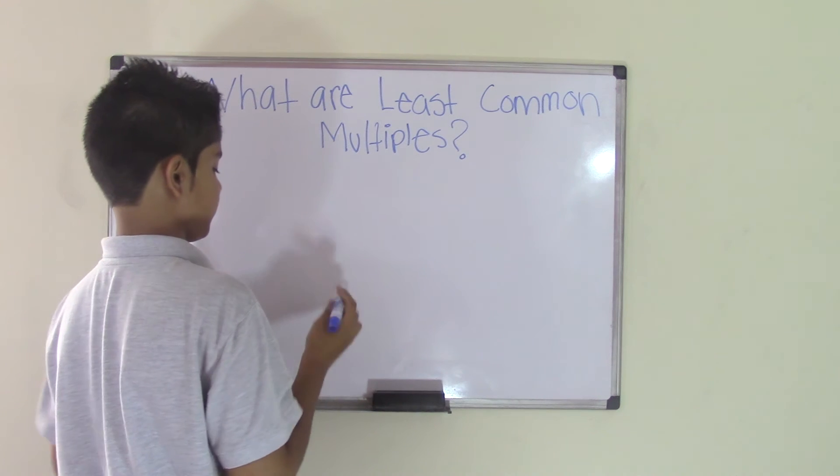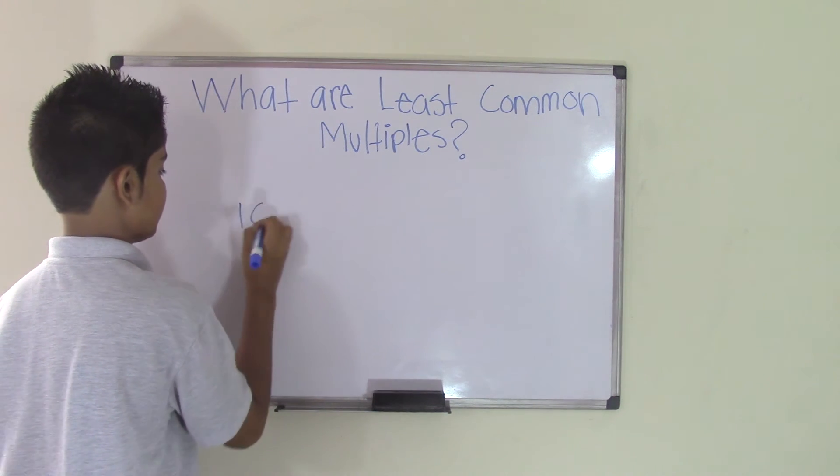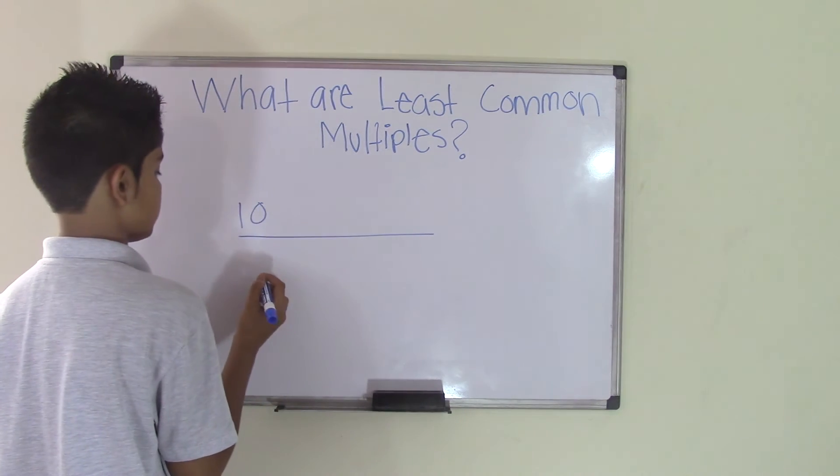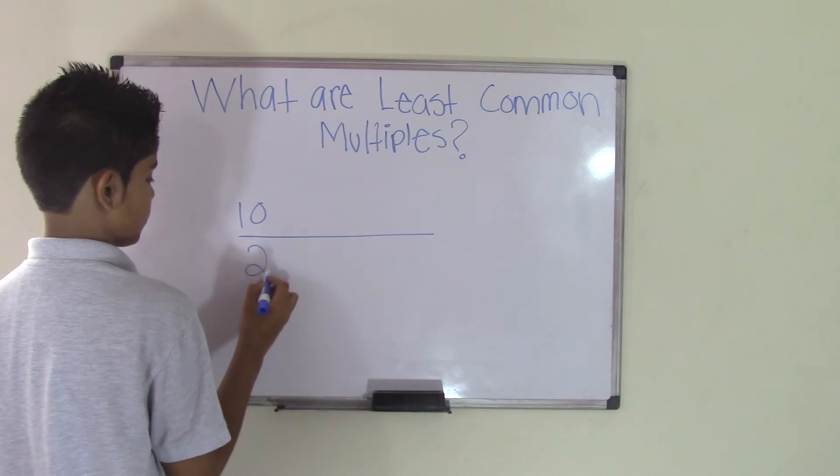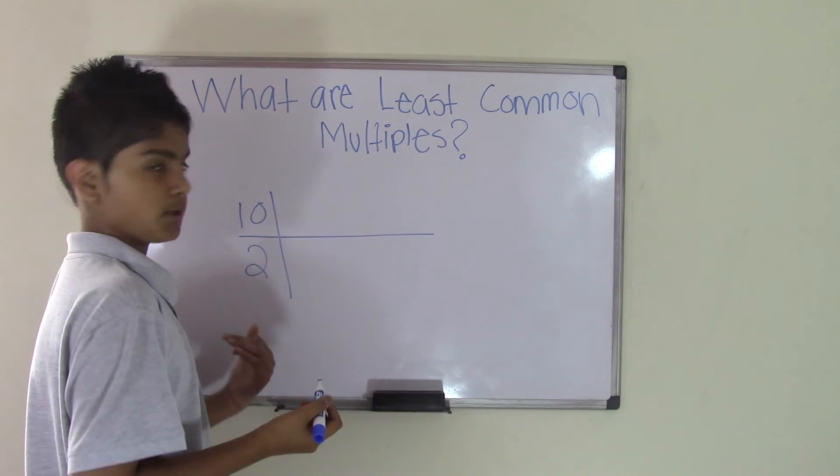For example, we have the numbers 10 and 2. Let's write the multiples of each number up to 5.